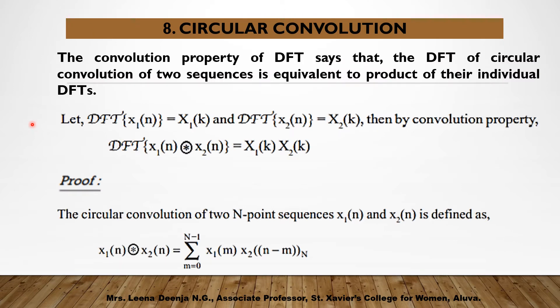The circular convolution property of DFT says that the DFT of the circular convolution of two sequences is equivalent to the product of their individual DFTs. Let DFT of x1(n) equal to X1(k) and DFT of x2(n) equal to X2(k). Then by the convolution property, DFT of the convolution between x1(n) and x2(n) is equal to X1(k) times X2(k).